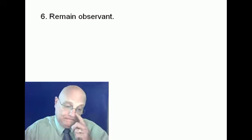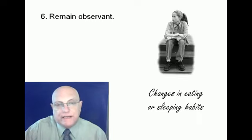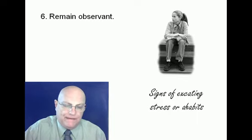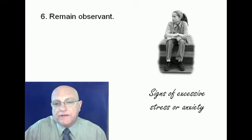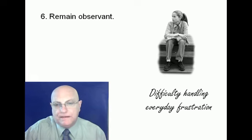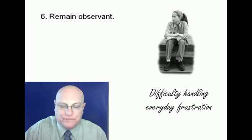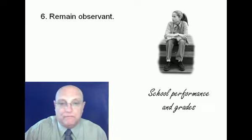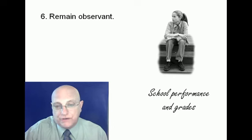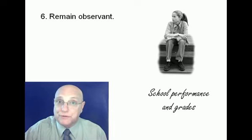Number six, remain observant. Note any changes in eating or sleeping habits, for instance. Look for any excessive signs of stress or anxiety that are unusual for that child. Also note if they seem to have difficulty just handling everyday frustrations. In other words, less tolerance for frustrations. And very important, monitor their progress and their grades in school because school is a very good barometer of what's going on with any child since all kids are supposed to go to school.